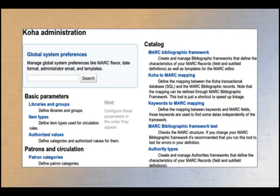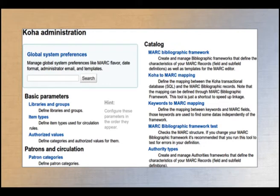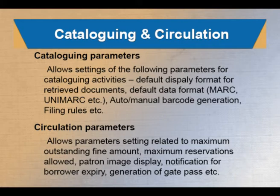Authorized values are used for generating different kinds of pick-up lists, and patron and circulation-related information like patron categories and patron privileges. In the catalog module, we set different parameters related to the default display format for document retrieval and default data format, with options for MARC 21, UNIMARC, CCF, or no MARC.